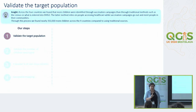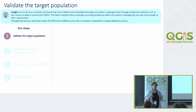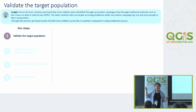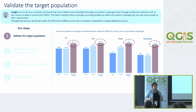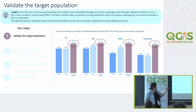The first step was to validate the target population. When we originally ran this using traditional sources like DHIS-2—which collects the number of children born at health facilities—and census data, we were seeing numbers like 153% of children vaccinated, which meant the denominator was off. So we used a less traditional source: vaccination campaigns. Vaccination campaigns go out into the community and try to find every single person rather than waiting for people to come to the health facility. By doing this, we actually found 350,000 more children across all four countries.